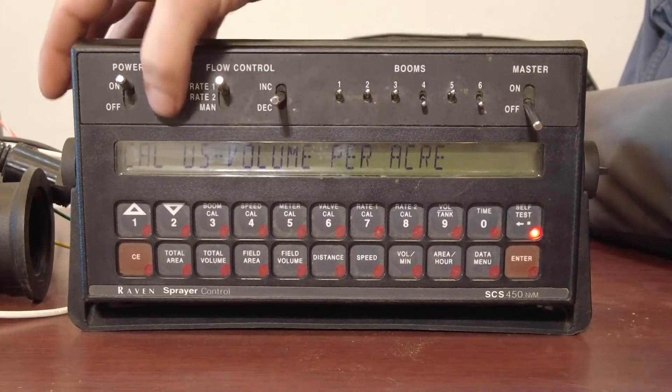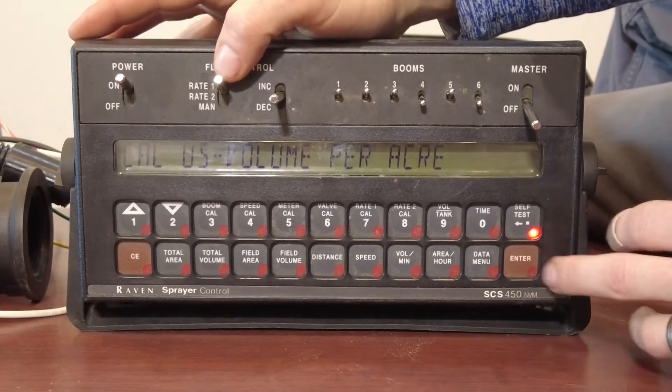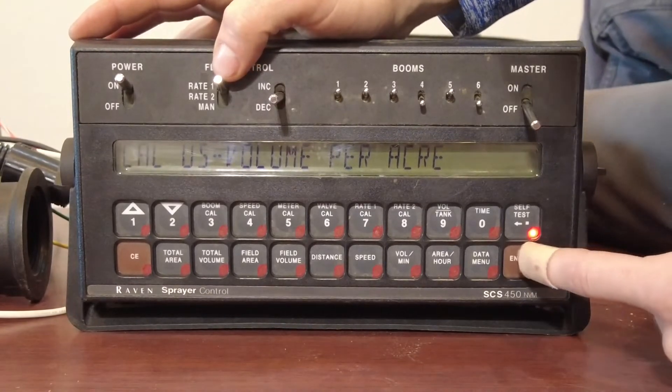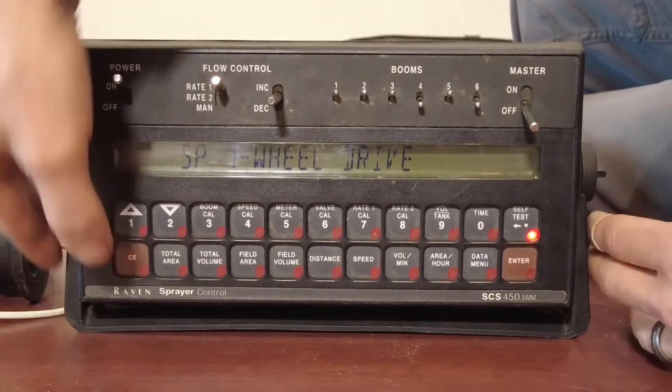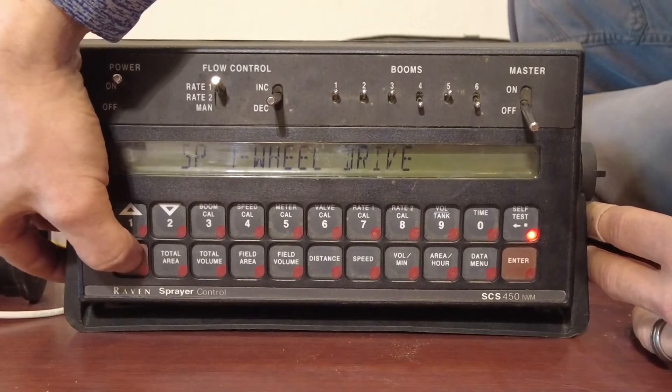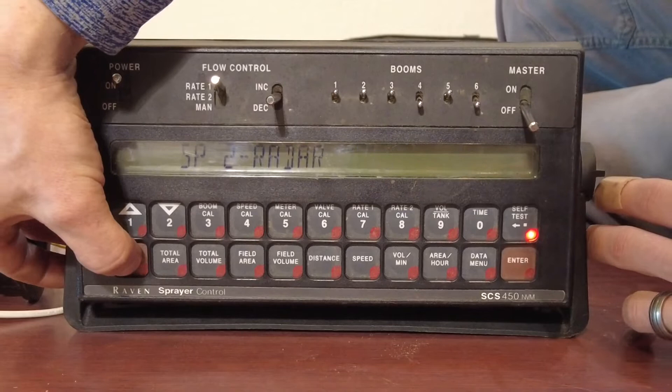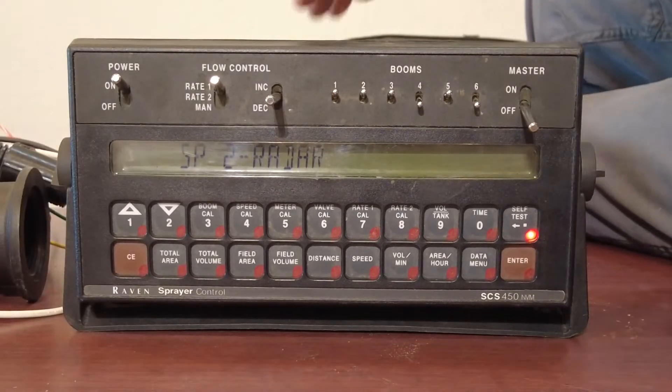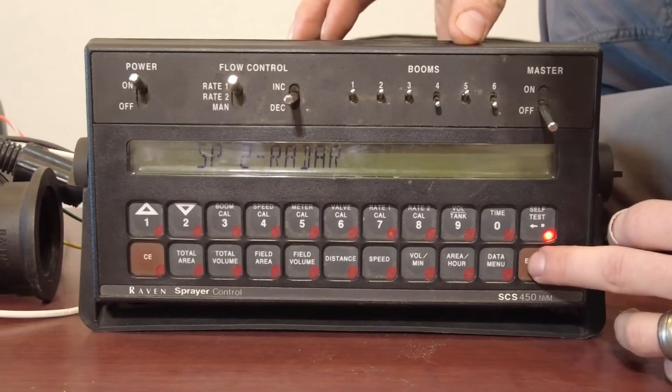So the first thing it's going to ask you is are you in U.S. volume per acre? The answer is yes, so we hit enter. The next one is our speed source. To scroll through this stuff, you'll hit the CE button. To select, you'll hit the enter button. So we want to scroll to radar because we're using an astro speed sensor. Enter.